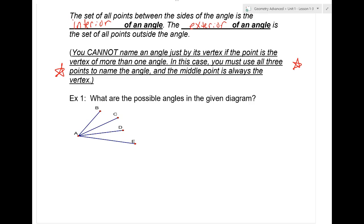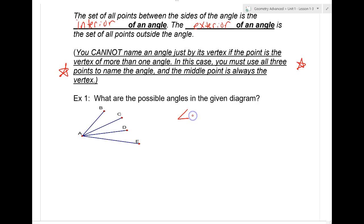Looking at this, it says, what are the possible angles in the given diagram? I cannot say angle A, because you can look at it and go, well, which one? So I need to be specific as I possibly can. So looking at this, we have to use three points to name it. Let's just have fun naming these. Do you guys agree with me that we could start and we can go angle B, A, C?